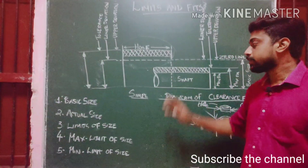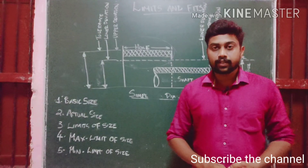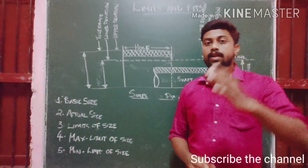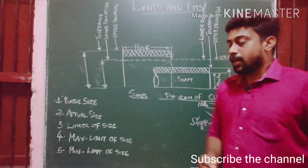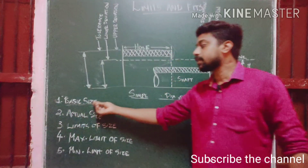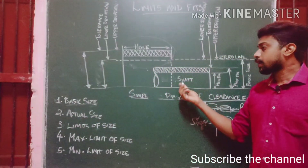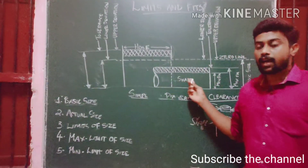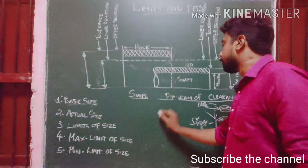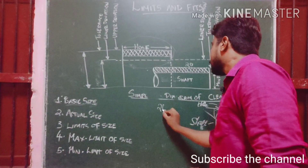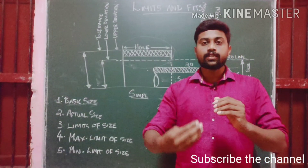We will learn about basic size, actual size, tolerance, maximum deviation, upper deviation, and lower deviation from this example of a hole and shaft. Let's start with basic size. What is basic size? Consider a shaft whose length is about 20 mm — this 20 mm is a dimension, and that dimension is the basic size.